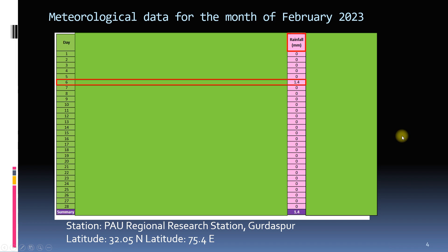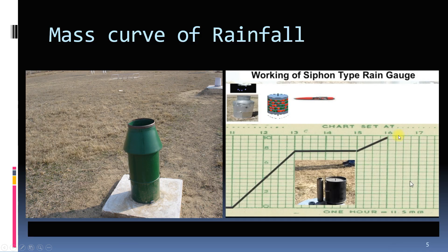Another type of data available from rain gauge stations is the mass curve of rainfall. The mass curve of rainfall is a plot of accumulated rainfall against time. This graph is generated by a siphon type rain gauge. If you want to know how this graph was made, you can watch the video where I explain the working of the siphon type rain gauge. The link for that video is given in the top right corner of your screen as well as in the description of this video.